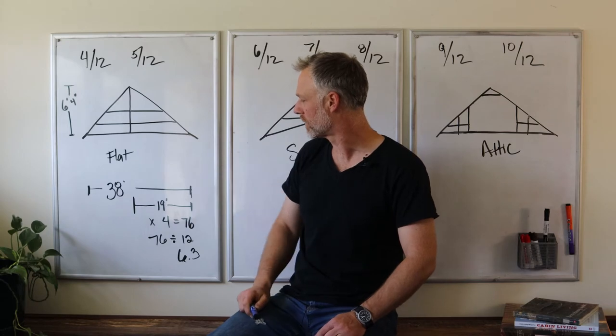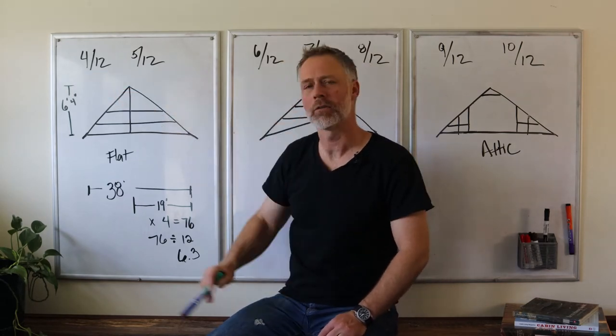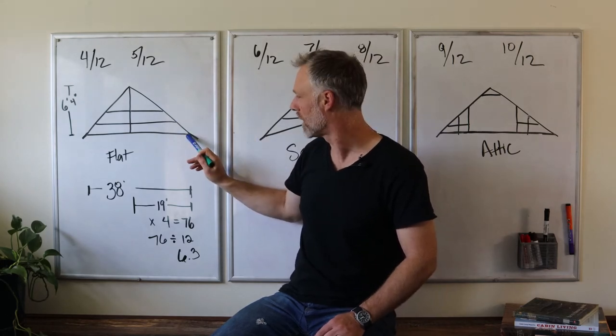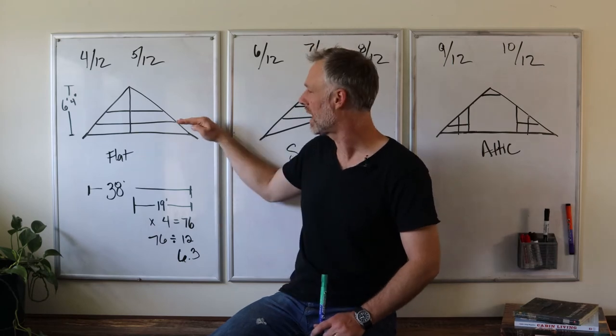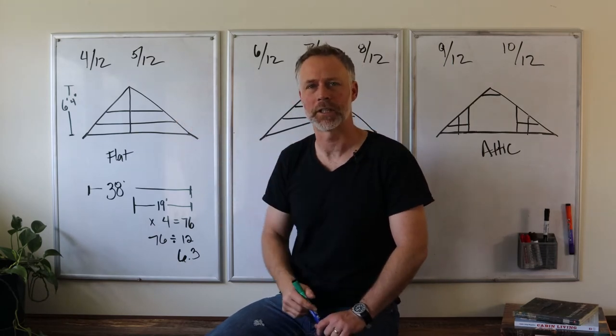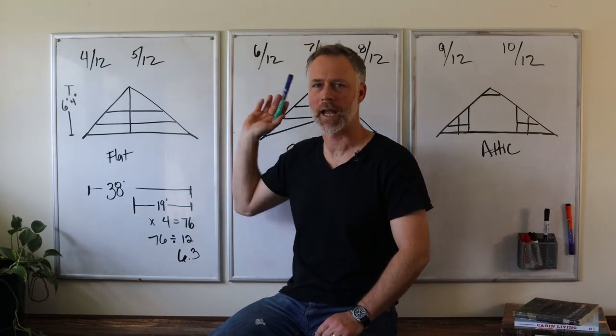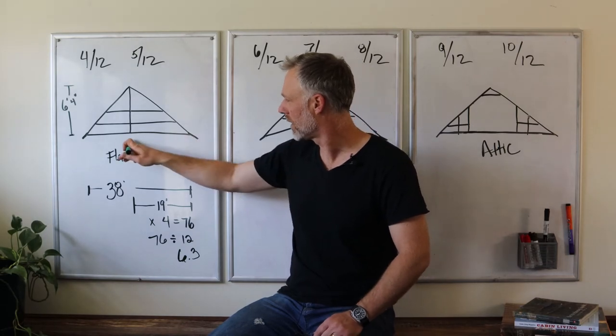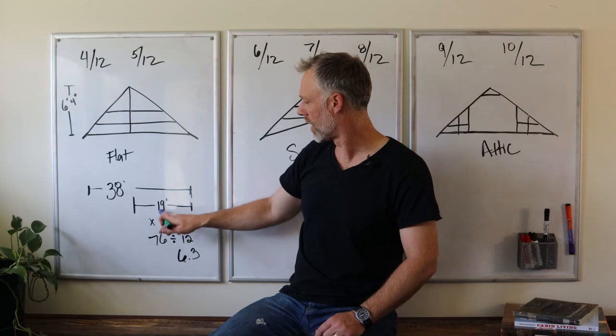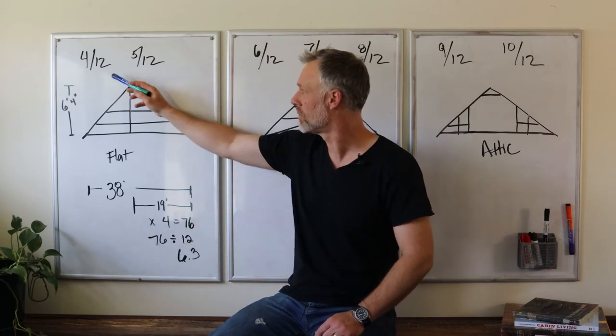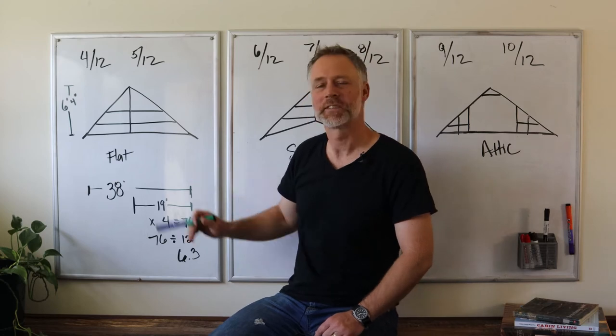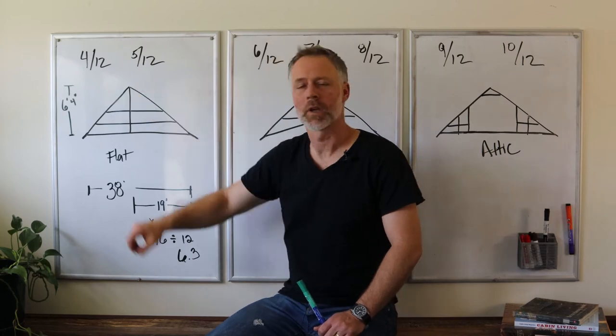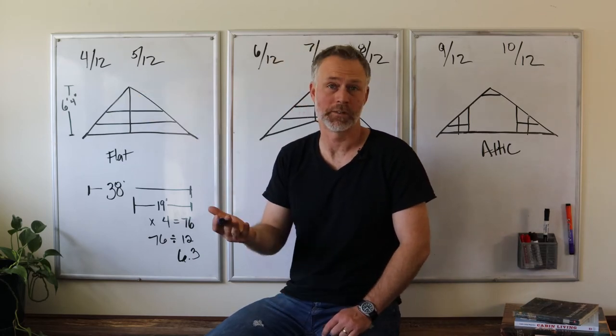Now the 4/12 pitch means that for every foot you move from the outside to the center, you're gaining 4 inches of elevation. You can do the same math for any pitch: 6, 7, doesn't matter. So theoretically from here to here it's 19 feet. You multiply that 19 times the 4, and that's going to give you 76 inches.